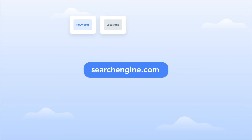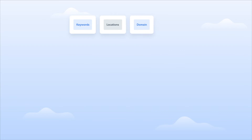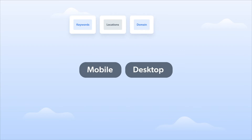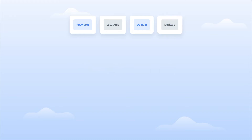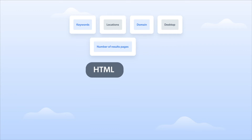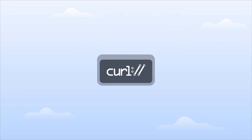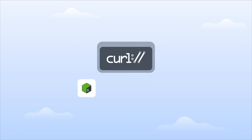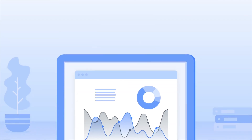Step number three: choose whether you want results from mobile or desktop, which results pages you want to collect data from — say 1 to 10 — and how you want your results delivered: HTML or JSON. The result is a curl delivered in any coding language of your choice: Shell, Node.js, Java, or Python, which you can pop into your source code and get the data you need to run your analytics or fuel your search and comparison platforms.